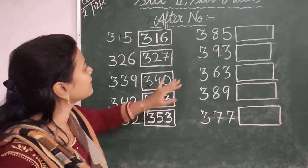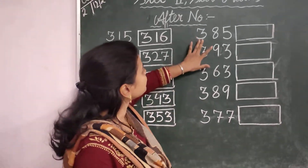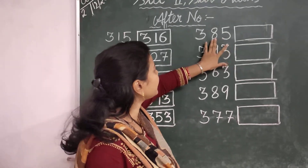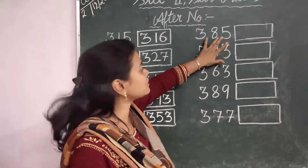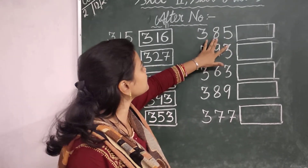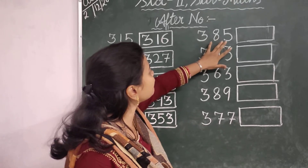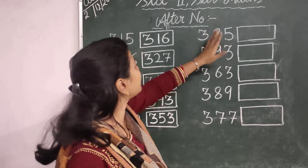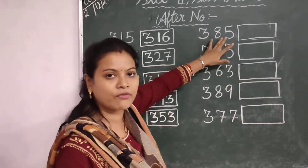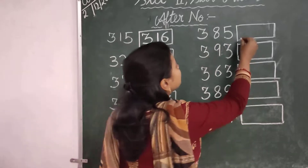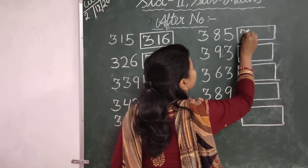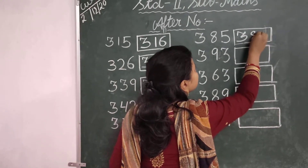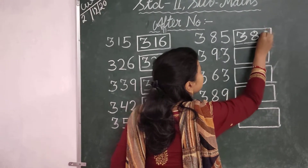Next 385. Here 85. So the next number after 85 is 86. So the number that comes after 385 is 386.